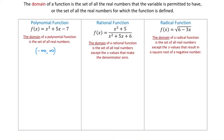We may remember from pre-algebra that in a fraction we cannot have 0 in the denominator because division by 0 is undefined. So we have to find the numbers that make the denominator 0 and exclude them from the domain. For this we will take the denominator x squared plus 5x plus 6, set it equal to 0, and find for what values of x this expression equals 0.